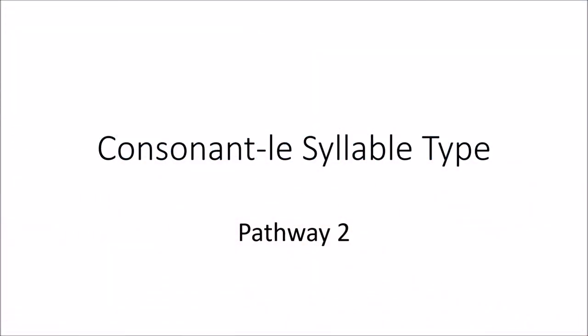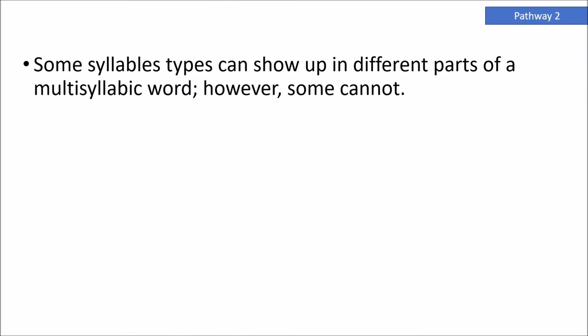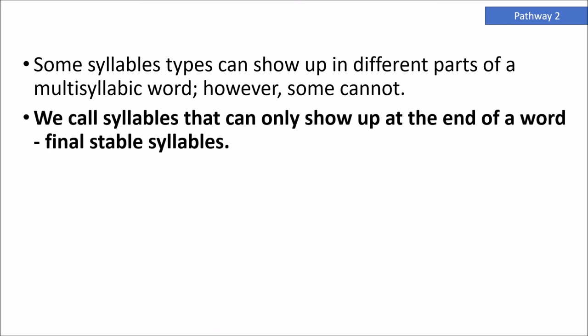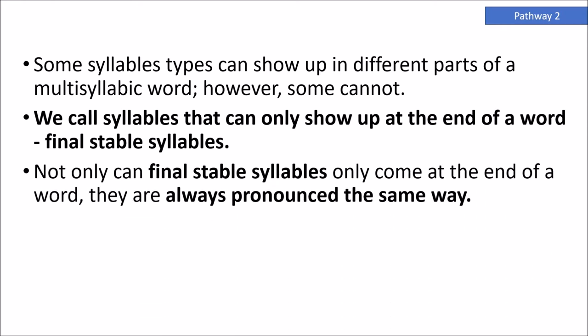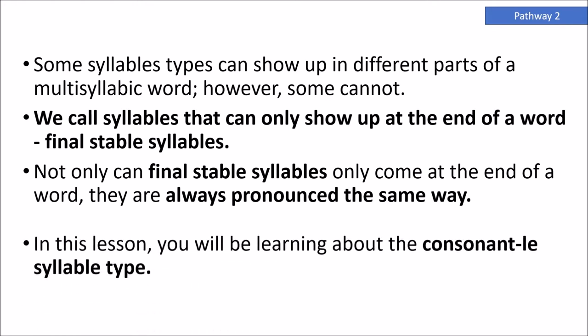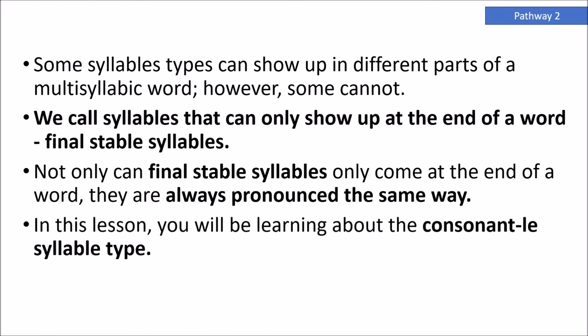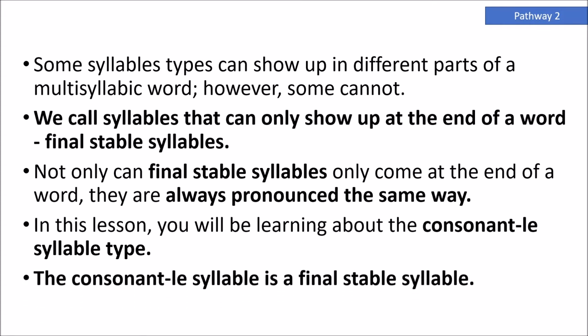Consonant LE syllable type. Some syllable types can show up in different parts of a multisyllabic word; however, some cannot. We call syllables that can only show up at the end of a word 'final stable syllables.' Not only can final stable syllables only come at the end of a word, they are always pronounced the same way. In this lesson, you will be learning about the consonant LE syllable type, which is a final stable syllable.